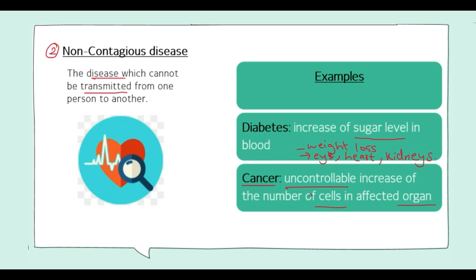So these are the two types of examples of non-contagious diseases — diabetes and cancer. In upcoming videos, we are going to learn about some of the ways we can prevent contagious diseases.